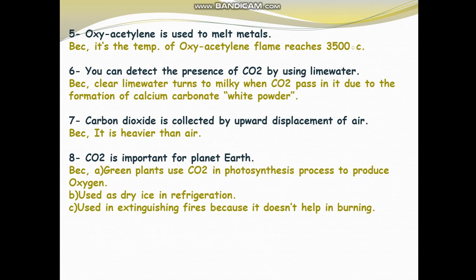Question 8: Carbon dioxide is important for planet Earth. The importance of carbon dioxide: First, green plants use carbon dioxide gas in the photosynthesis process to produce oxygen, which we need. Second, it is used as dry ice in refrigeration. Third, carbon dioxide gas is used in extinguishing fires because it does not help in burning — which is also the inverse of oxygen.